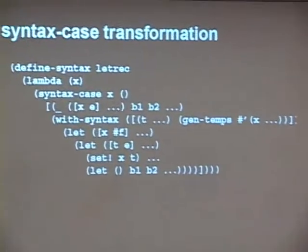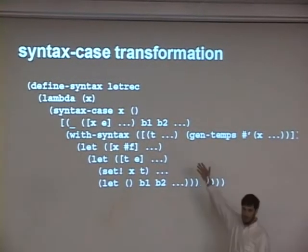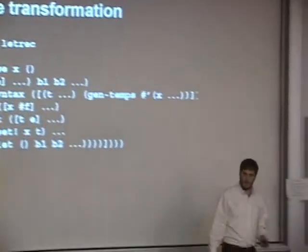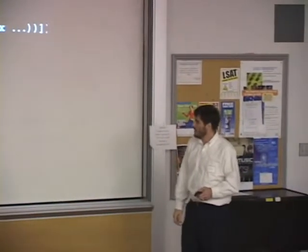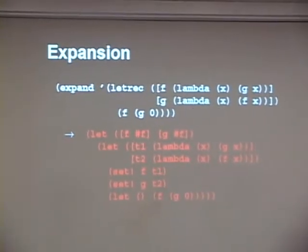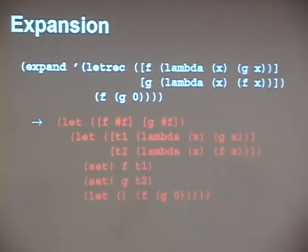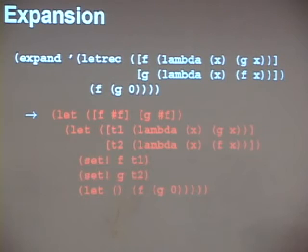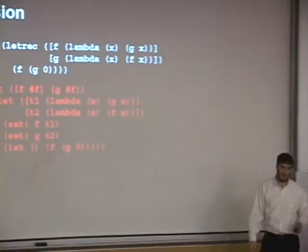Here's what it looks like in syntax-case — a lot more straightforward, because we just generate the temporaries using a little generate-temporaries routine, and we're allowed the full power of the language so we use it. We get this done more directly. Either way, here's what it expands into: you get this simple F that calls G and G that calls F — never mind that it's an infinite loop. And we have this structure that's kind of obvious given the transformation.